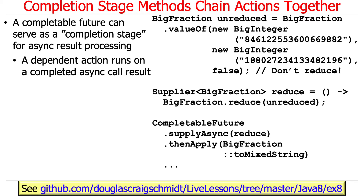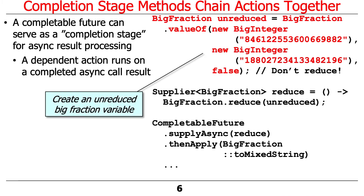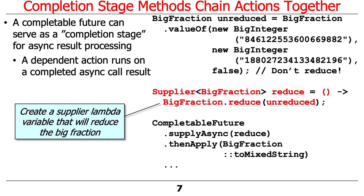Let's take a look at an example from the ex8 folder in my GitHub repository. It's going to do some big fraction operations. The first thing we do is create a non-reduced, or unreduced, big fraction — we give it a big integer as its numerator, another big integer as its denominator, and pass a false flag that says don't reduce this fraction. We're going to reduce it in the background because that could take a while. Then we define a supplier lambda called reduce, which when called will reduce the unreduced big fraction.